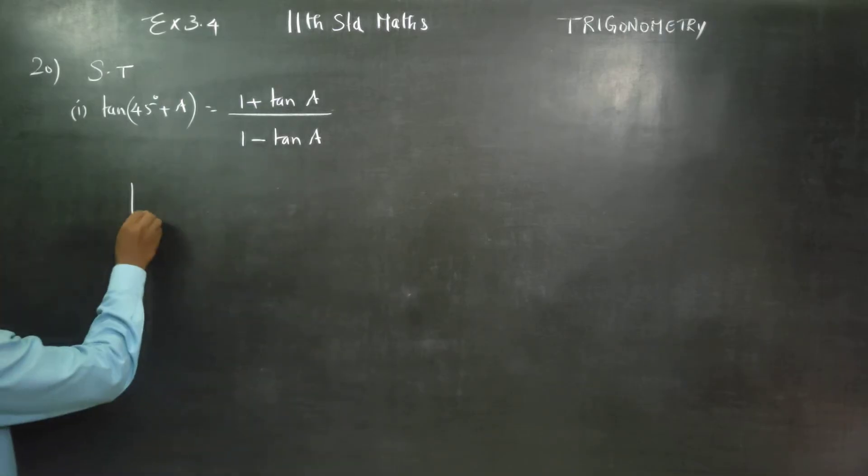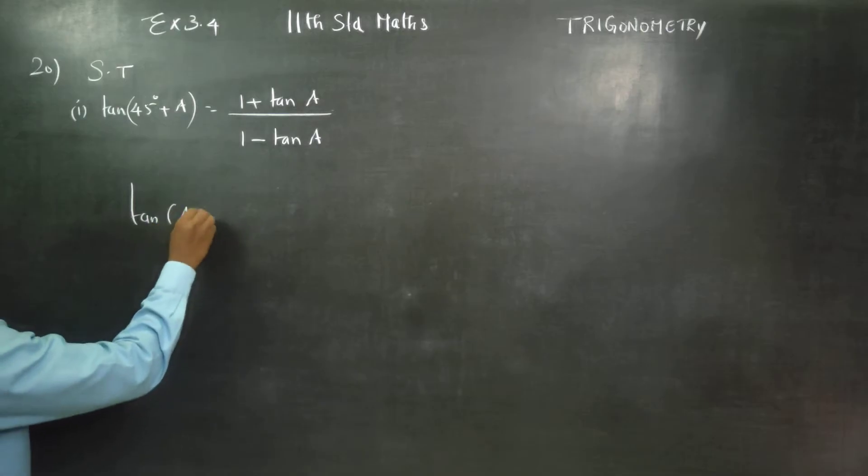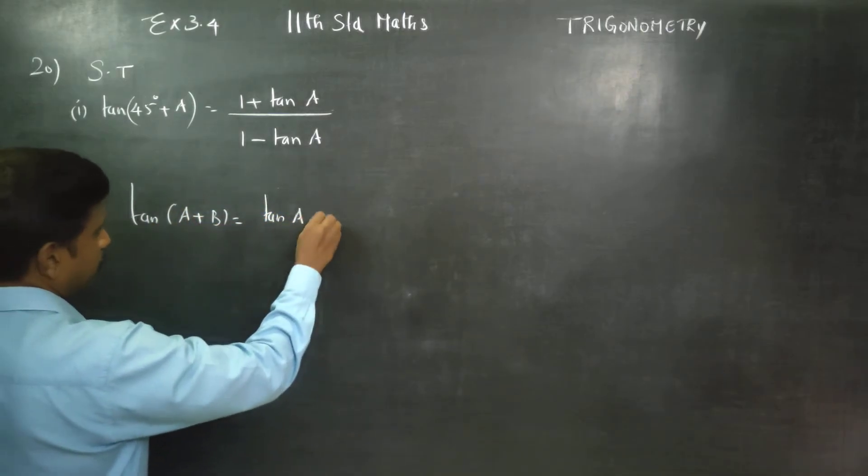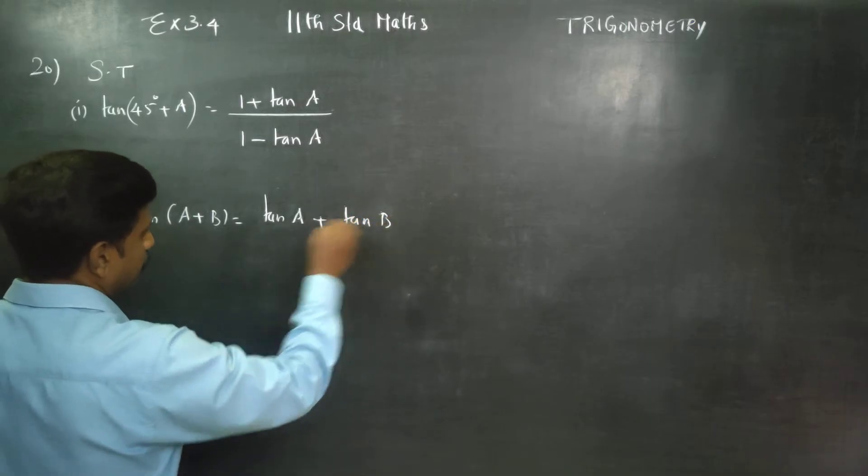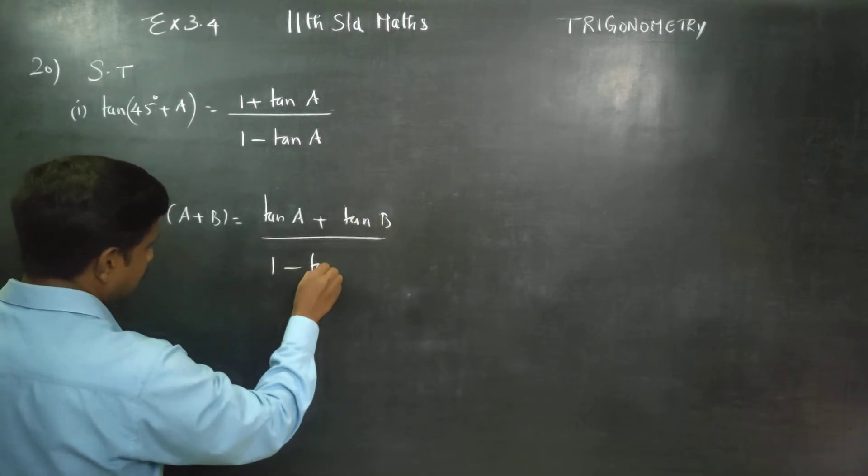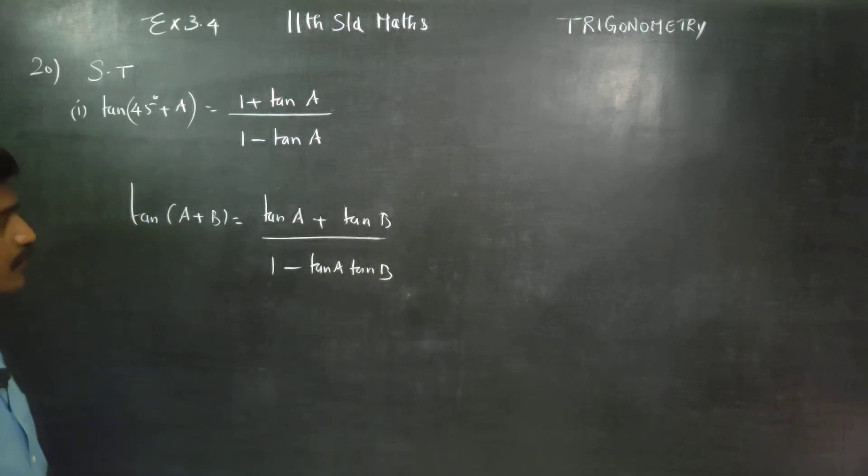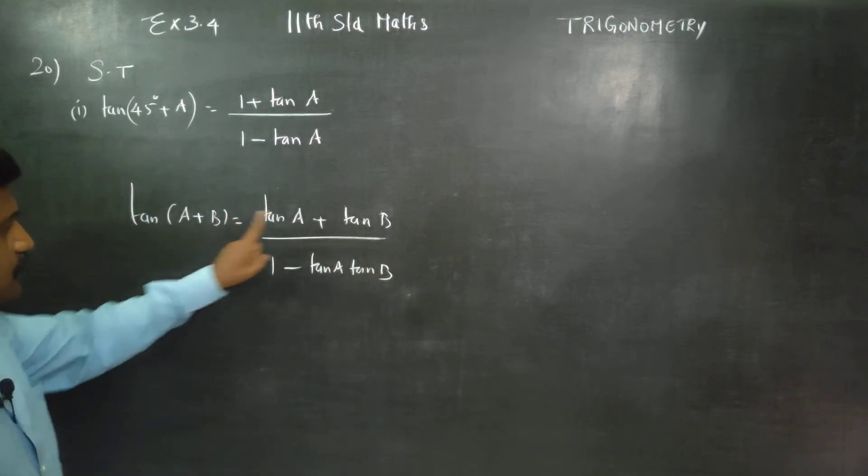We very well know the formula for tan A plus B. Tan A plus B is equal to tan A plus tan B by 1 minus tan A tan B. It is the formula.